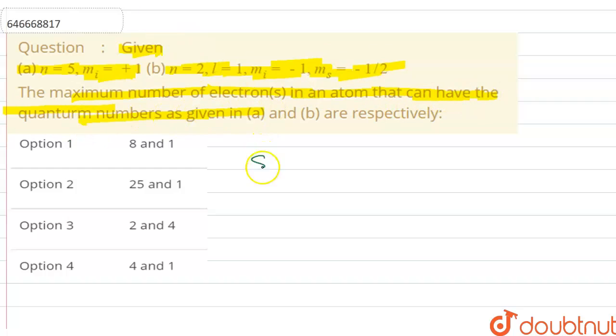So how to solve this problem? In case of the first part, n equals to 5 and ml equals to plus 1. ml depends on the value of azimuthal quantum number that is represented by l.